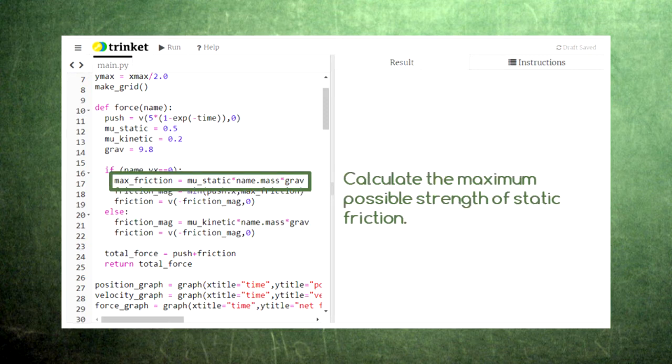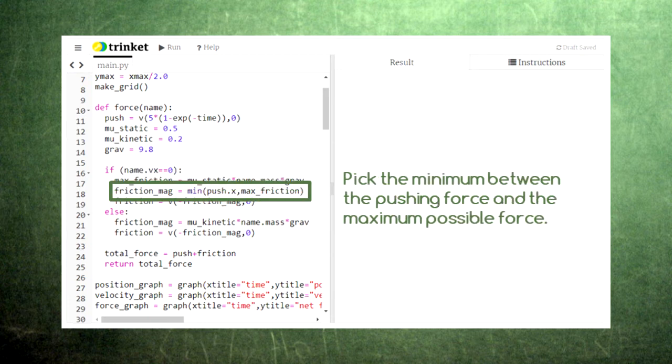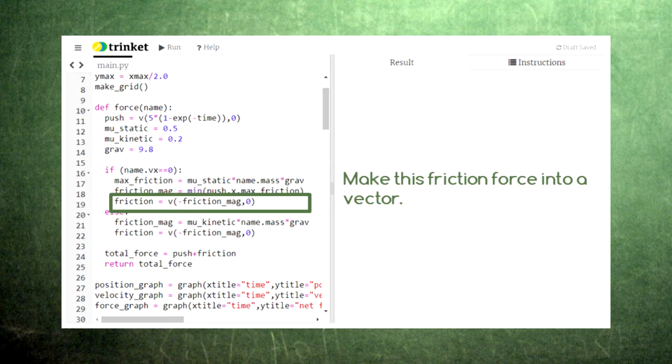In the case of static friction, we first calculate the maximum static friction that we can possibly have. Then, we set the friction force equal to the maximum value or the force we're pushing with, whichever is less. Then, we create a vector for the friction force.